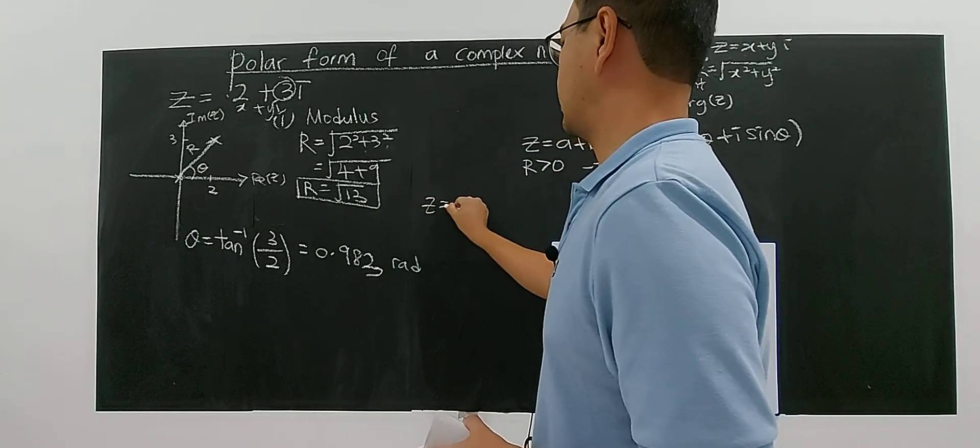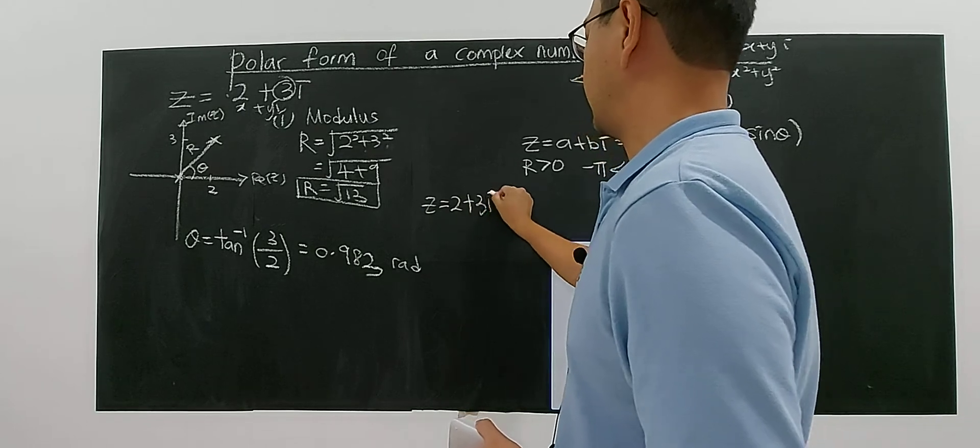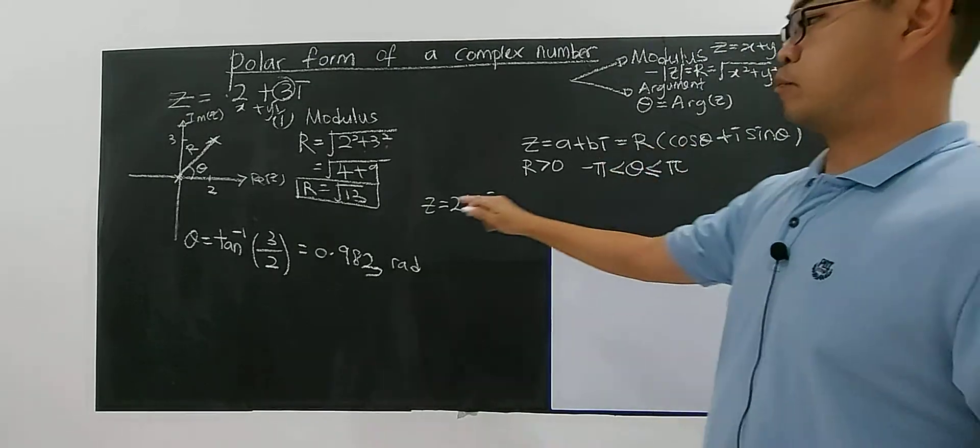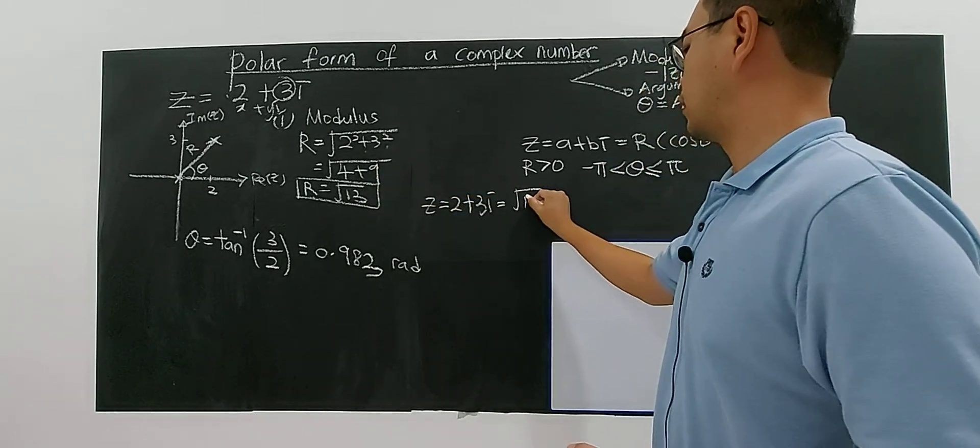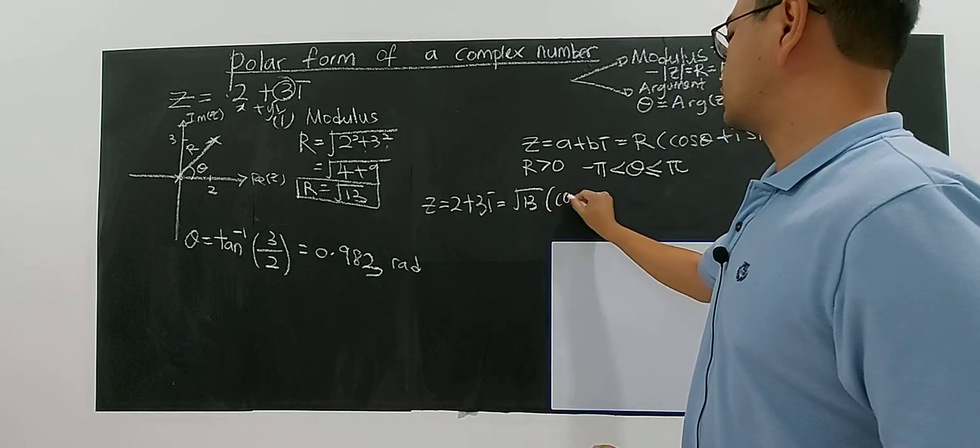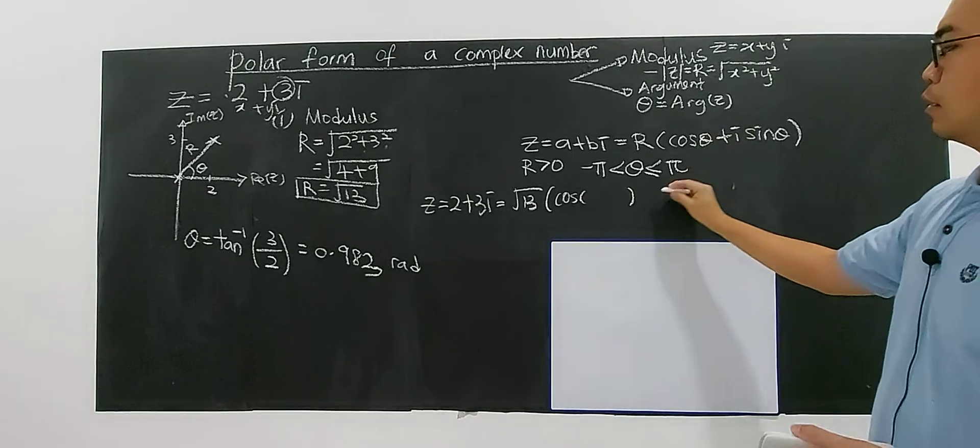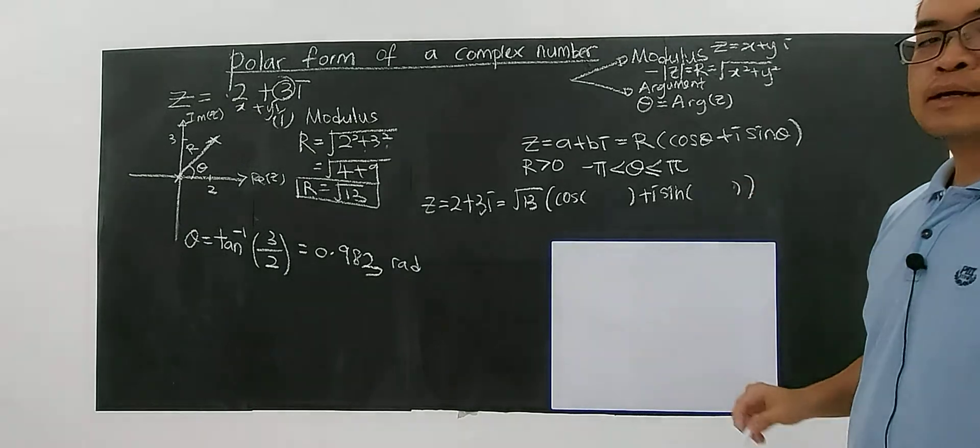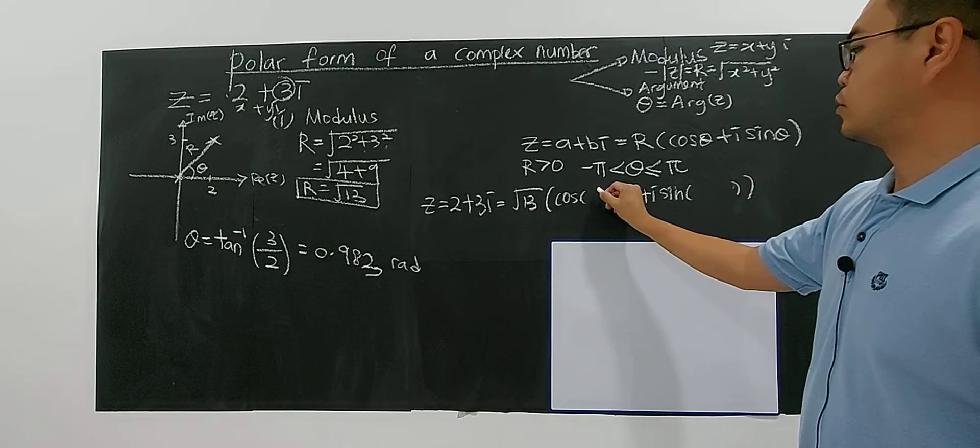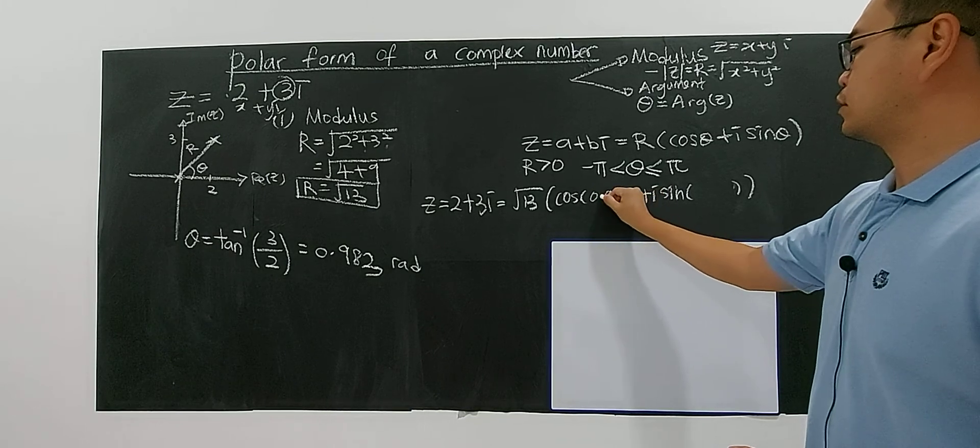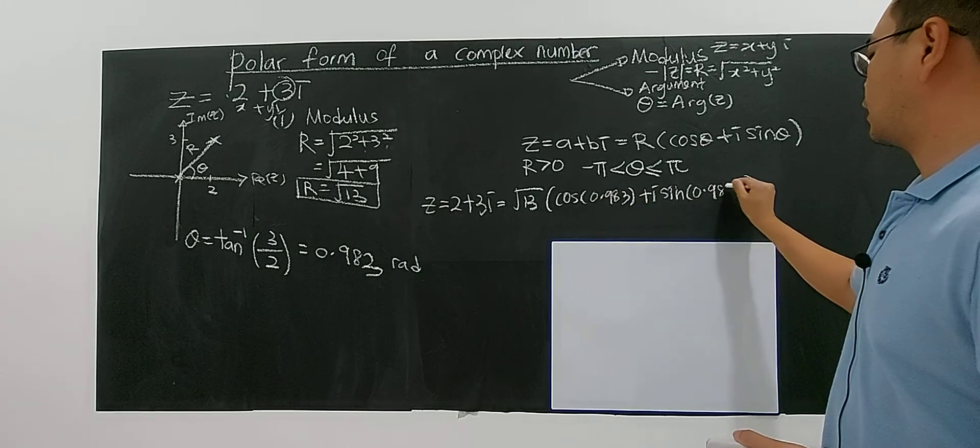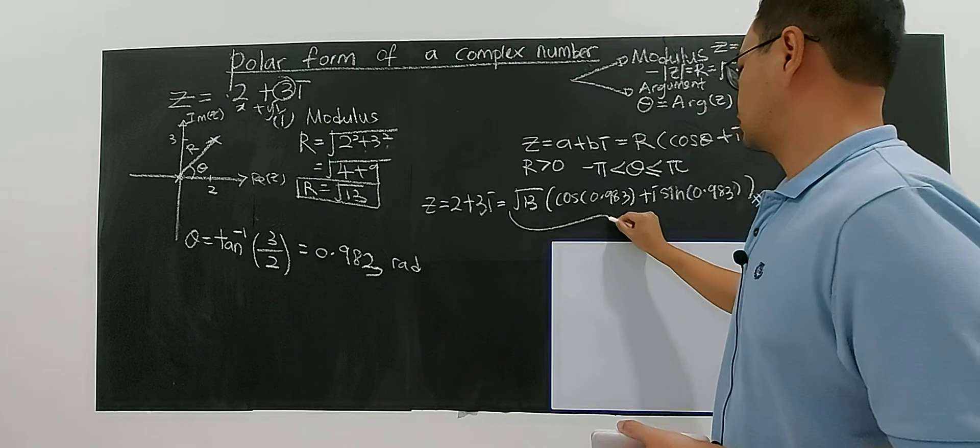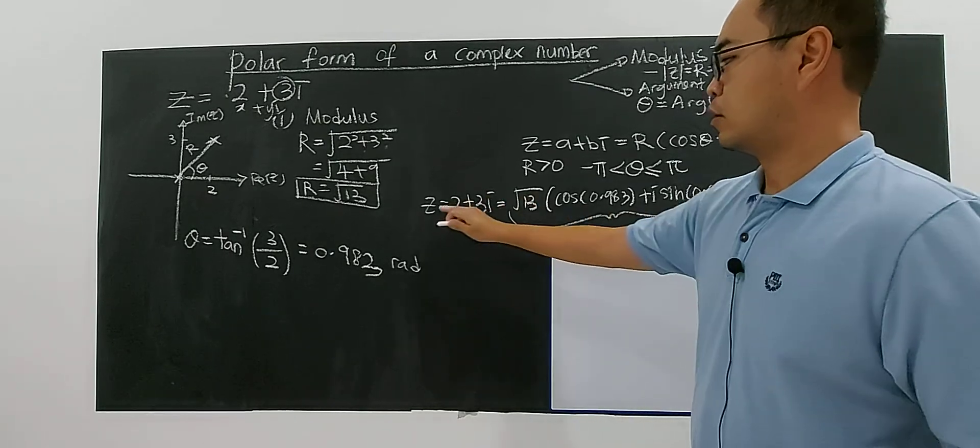Therefore, z = 2 + 3i in Cartesian form becomes, in polar form, √13(cos(0.983) + i sin(0.983)). By plugging in the value of r and theta into the formula, this is your polar form for this complex number.